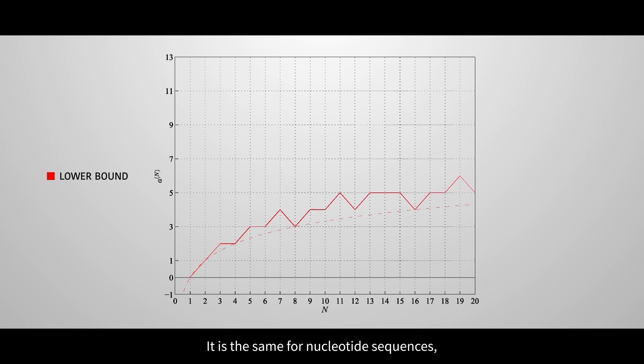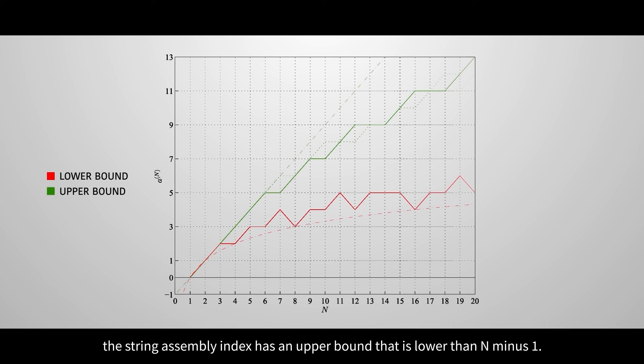It is the same for nucleotide sequences, for example. Furthermore, we show that for any finite number of these unique digits, the string assembly index has an upper bound that is lower than n minus 1.